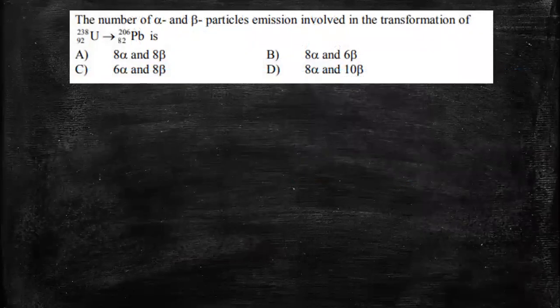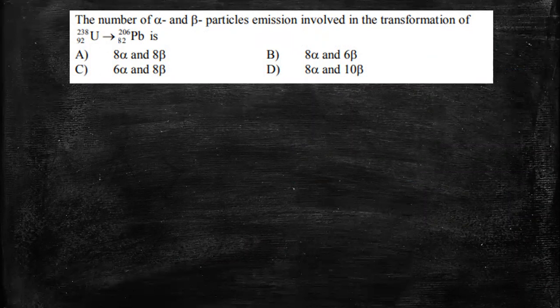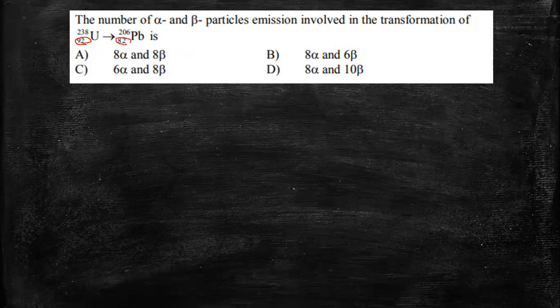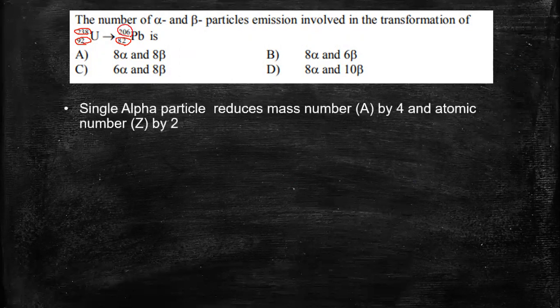Third question is the number of alpha and beta particle emissions involved in the transformation of U238,92 to Pb206,82. As you know, this is the atomic number and the one above is the mass number. So there are a few points you need to understand to answer this question.